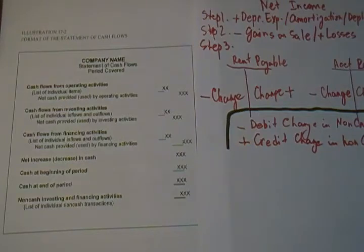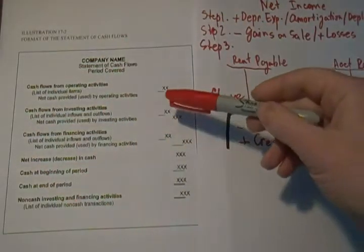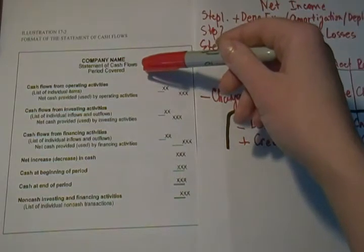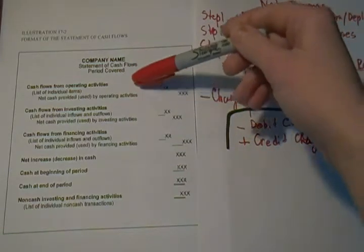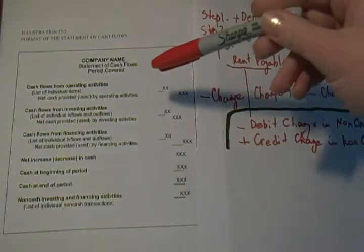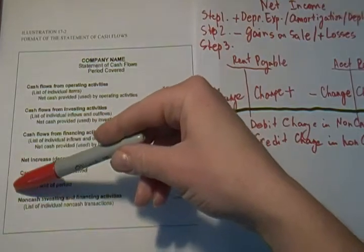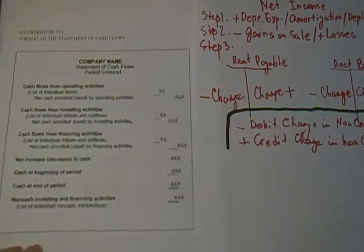In this second video, I would actually like to prepare the first operating section of the statement of cash flows using the principle that I outlined in the first video. The basic setup of this statement is described right here — you have to write out a very good title, otherwise your statement would look like a headless horseman. We will only discuss non-cash current assets and liability changes in this section; the cash part will be taken care of at the very end of the statement.